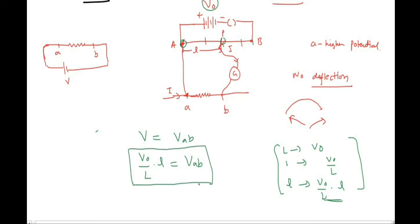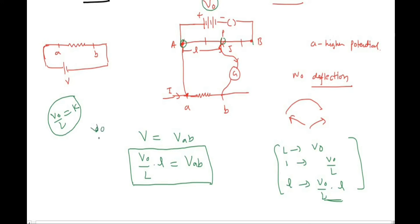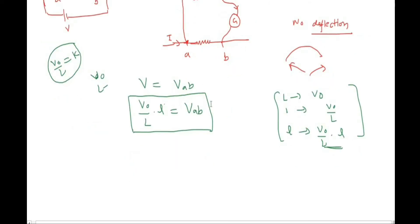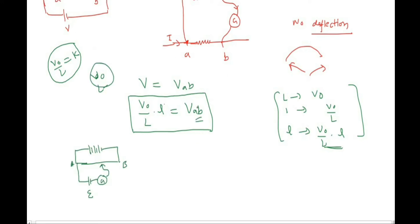V naught divided by L is sometimes called the potential gradient — voltage per unit length of the potentiometer. The value of V naught is known, L is known, and l is measured using the meter scale placed alongside the potentiometer. In this way we can find the potential difference between two points.